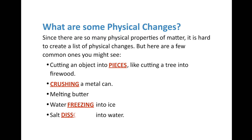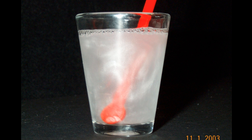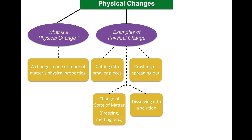Finally, we have salt dissolving into water. The creation of a mixture — whether heterogeneous, homogeneous, or even a solution — is an example of a physical change. If you pour salt into a cup and stir it up, the salt is still there; it's just physically mixed together with the water. No new substance is created. So dissolving into a solution or creating a mixture is an example of a physical change. Cutting into smaller pieces, crushing, spreading out, changing state of matter, dissolving into a solution — all examples of physical change, and so many more.